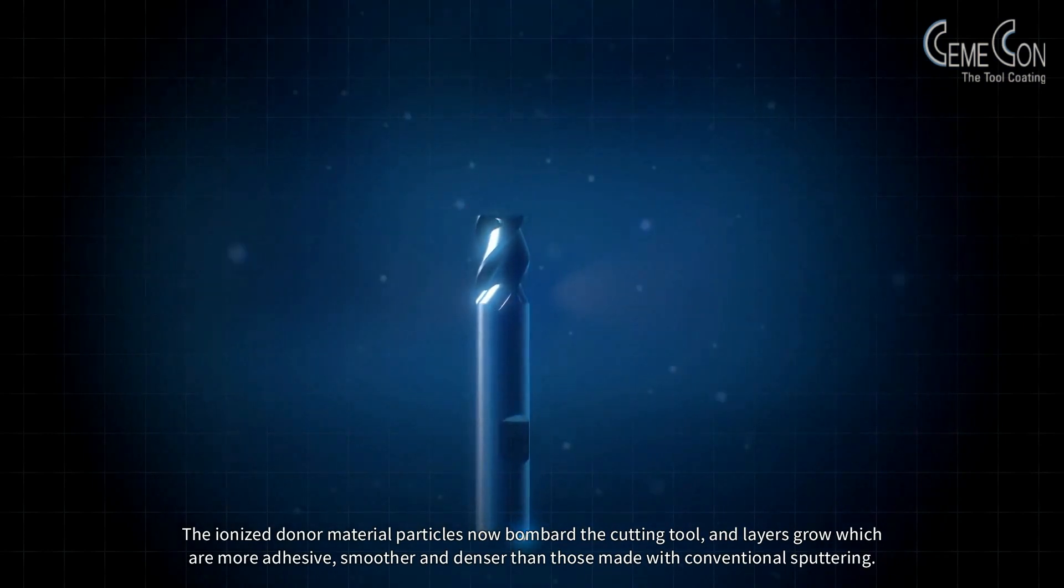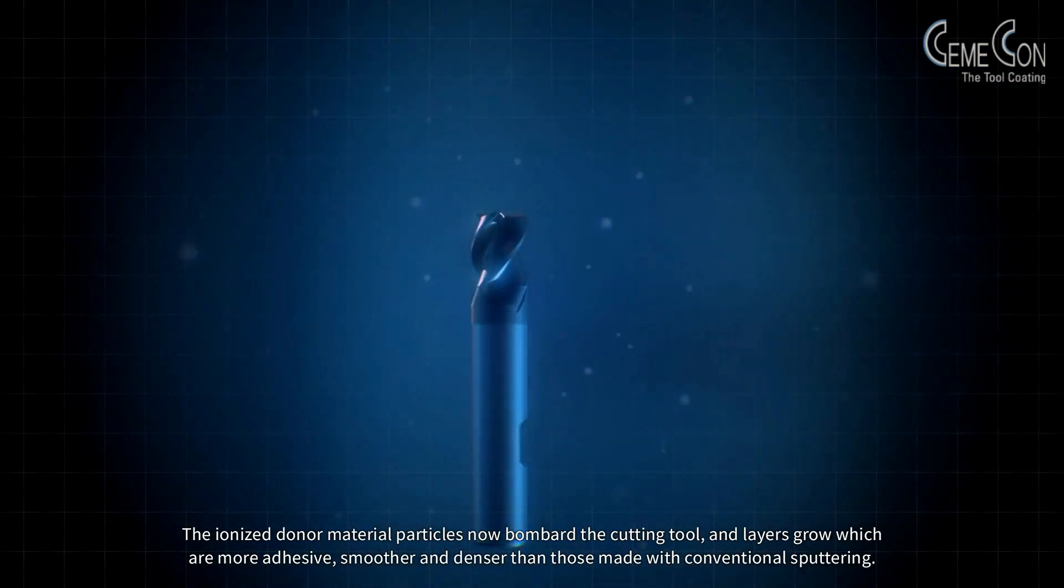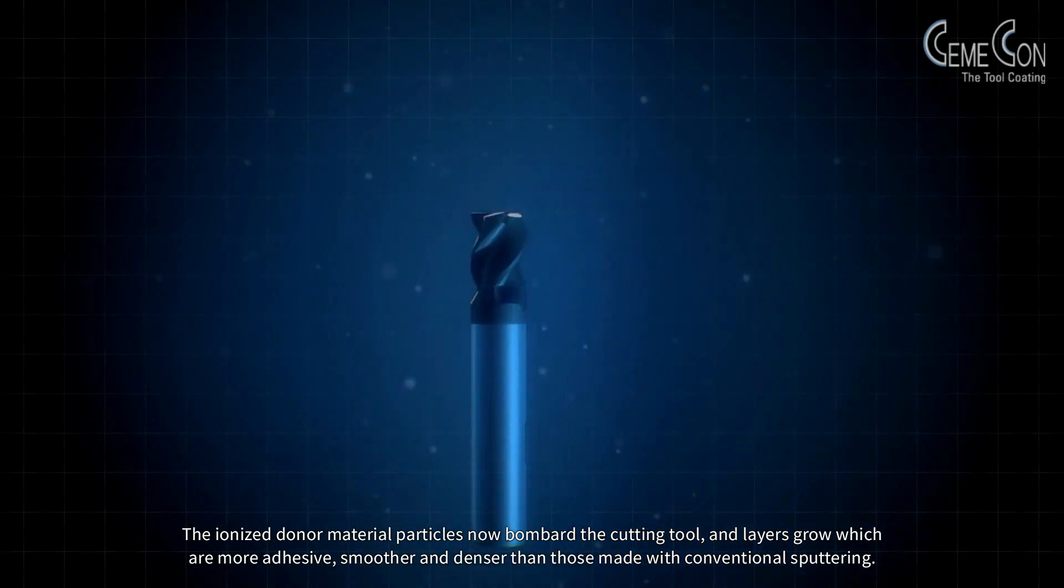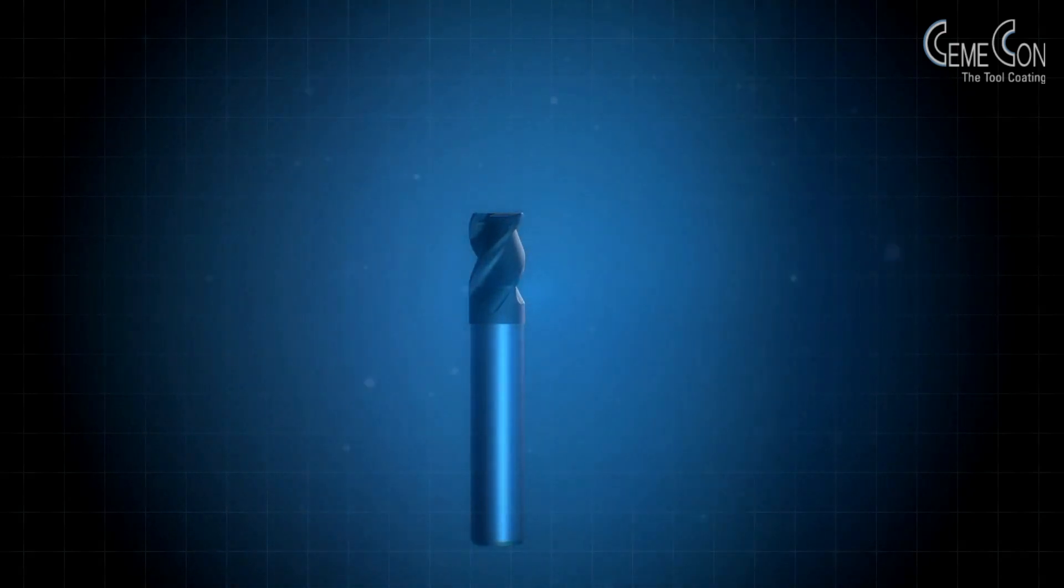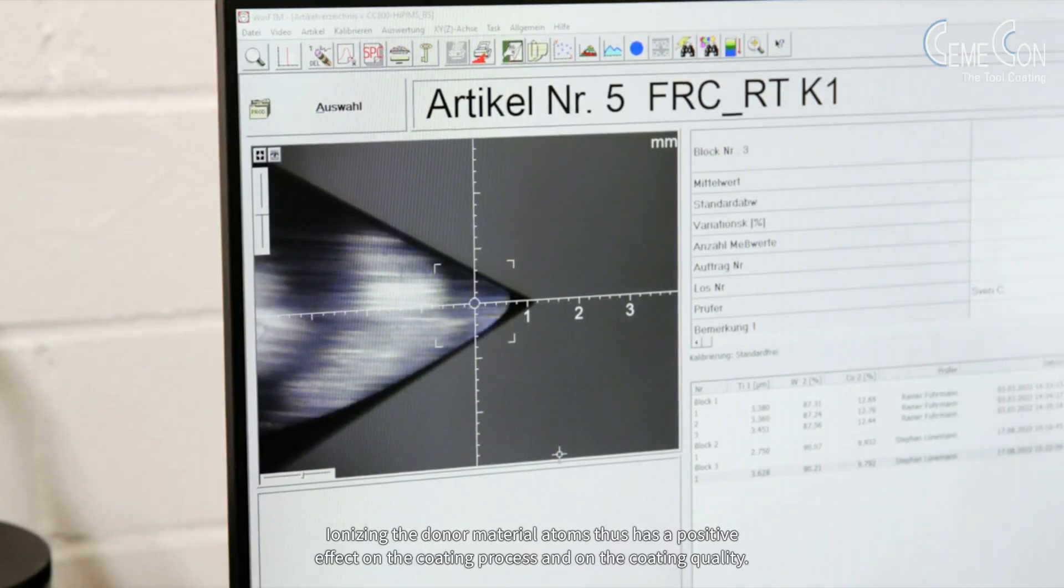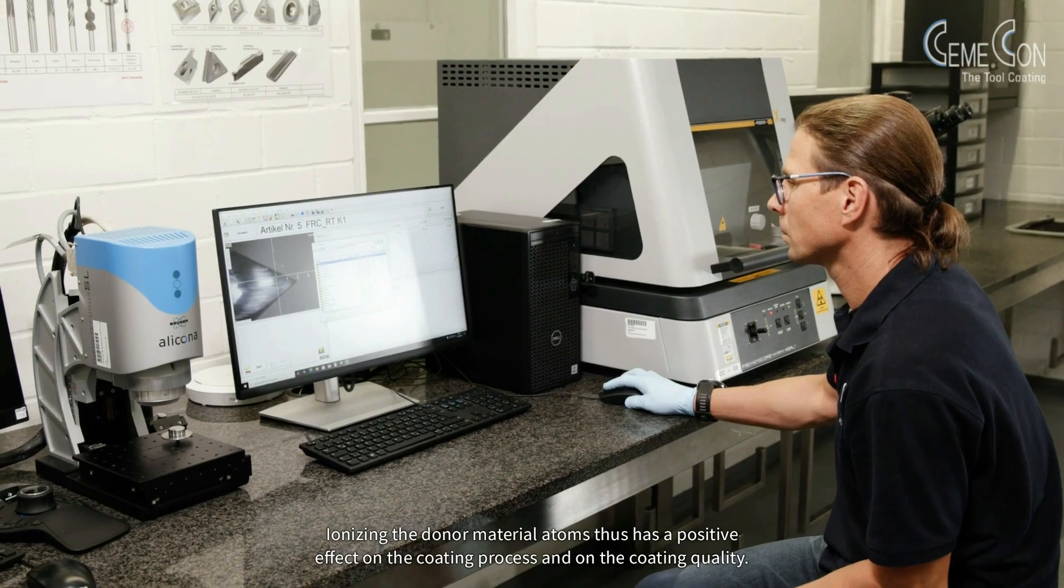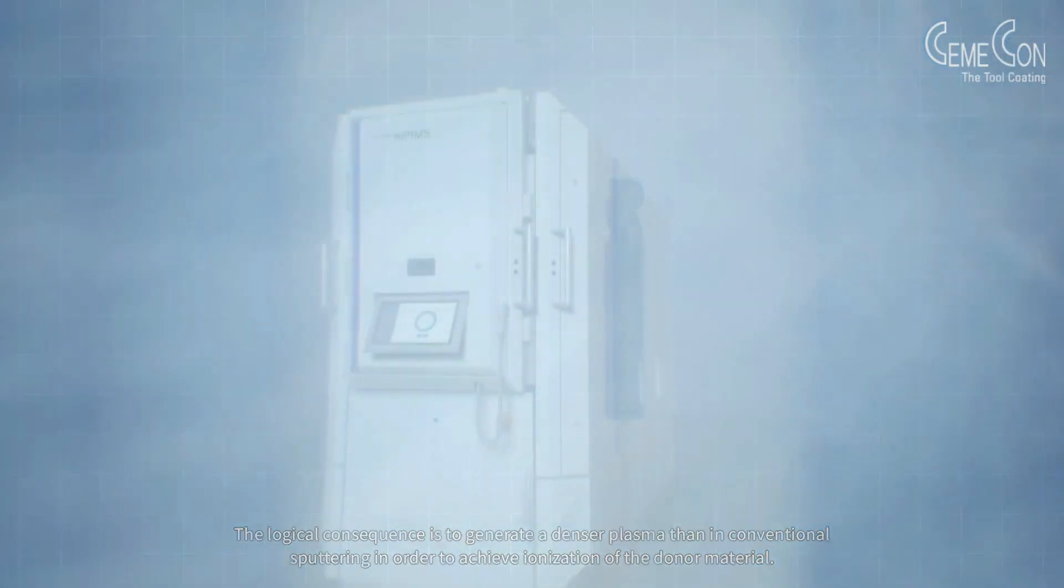The ionized donor particles now bombard the cutting tool and layers grow which are more adhesive, smoother and denser than those made with conventional sputtering. Ionizing the donor material atoms thus has a positive effect on the coating process and on the coating quality. The logical consequence is to generate a denser plasma than in conventional sputtering in order to achieve ionization of the donor material.